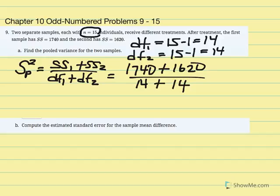In our calculators, 1740 plus 1620 divided by 14 plus 14, which is 28, gives us 120. So the pooled variance is equal to 120.